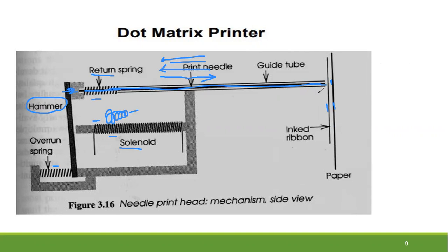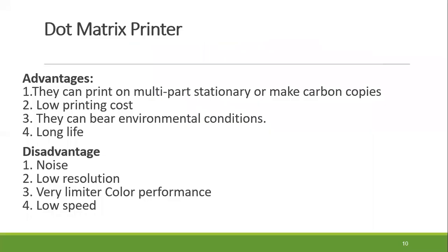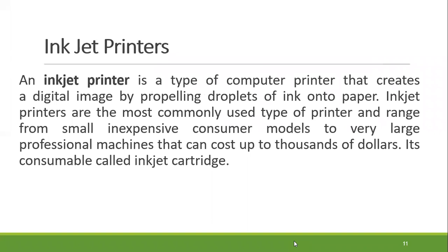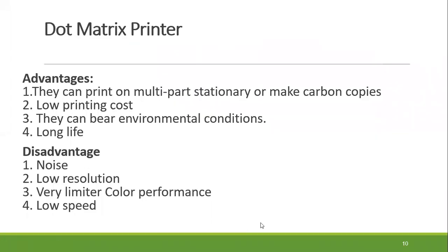We use this as the type of printer, following the dot matrix printer working procedure. One advantage is that it can make a carbon copy. The printing cost is low, but the laser printing quality is low as well. The noise is created during printing. The resolution is bad, and it has very limited color performance — only limited color output. So this is slow, and we have the dot matrix printer characteristics.